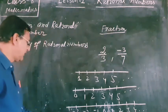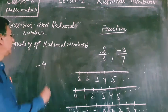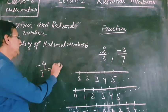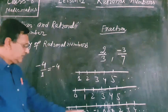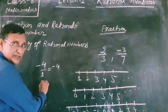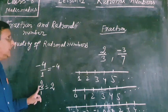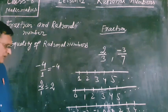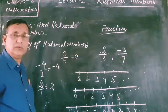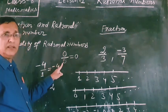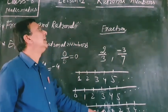To show that an integer is a rational number, take minus 4. We can divide it by 1, so minus 4 by 1 equals minus 4, and minus 4 by 1 is a rational number. Similarly, take 2 divided by 1, which equals 2, and 2 by 1 is a rational number. Also, 0 divided by 5 equals 0, so 0 is also a rational number.